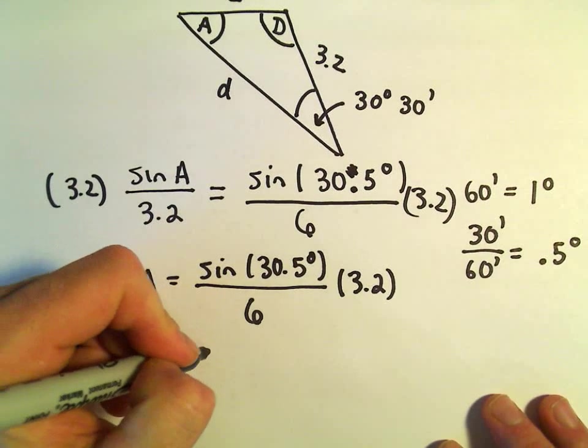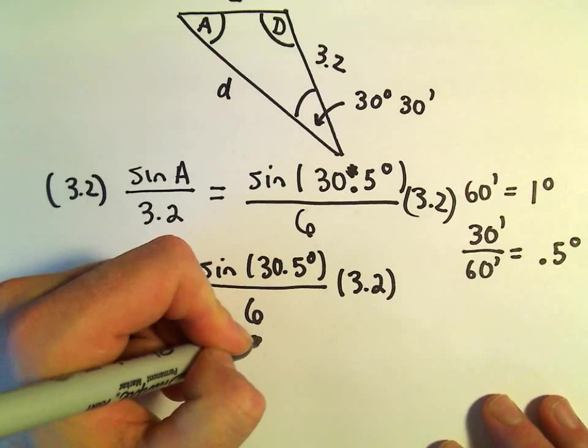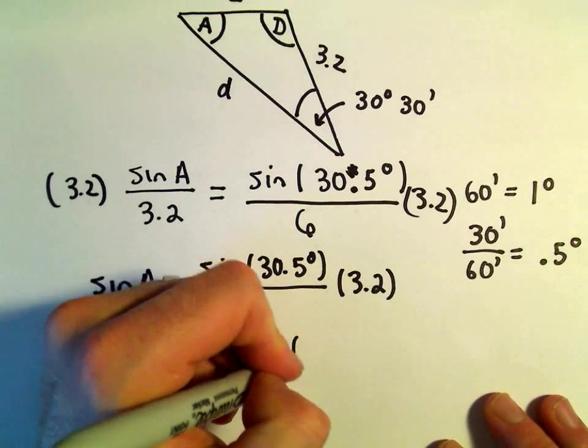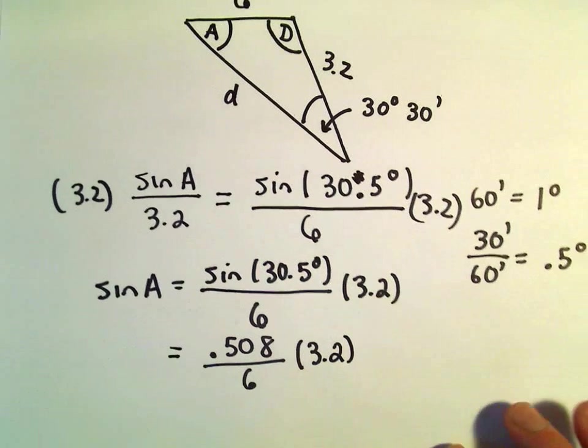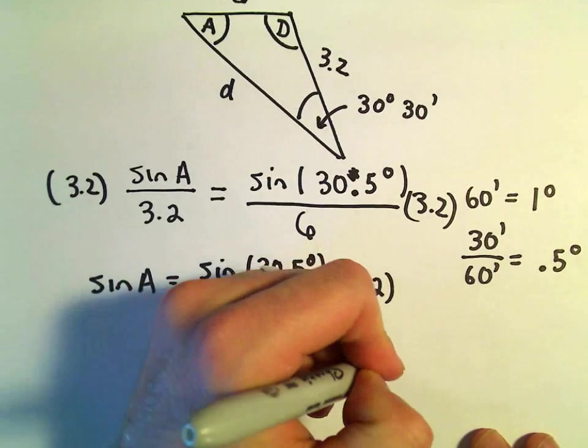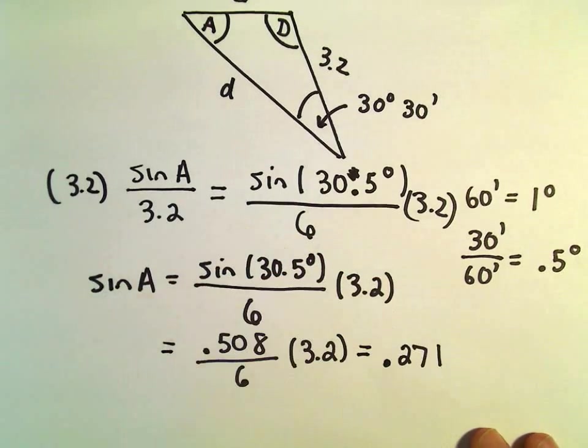I'm getting that to be roughly .508 after rounding. Over 6 multiplied by 3.2. So .508 divided by 6 multiplied by 3.2, I'm getting this to equal roughly .271.